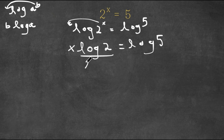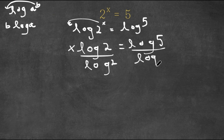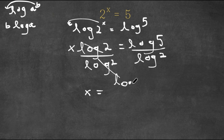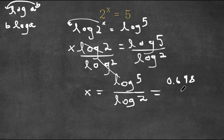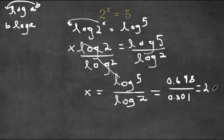Now I'm going to divide both sides by log 2. So these two cancel out, and I'm left with x is equal to log 5 over log 2. Log 5 is approximately 0.698 and log 2 is approximately 0.301, so log 5 over log 2 is approximately equal to 2.32.